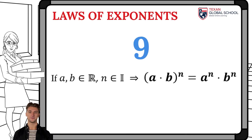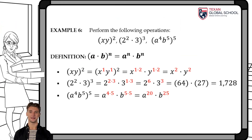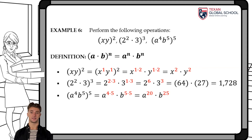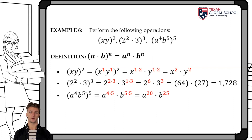The following definition indicates that the product of two different bases raised to the nth power is equivalent to raising each base with the same exponent n. For example, the product xy squared multiplies the exponents of each variable by the outer exponent, giving x squared y squared. The product of 2 squared times 3, all cubed, multiplying the exponents of each base, equals 2 raised to the sixth power times 3 cubed. Then 2 to the sixth is 64 and 3 cubed is 27, so the product is 1728. Finally, a to the fourth times b to the fifth, all raised to the fifth, gives a raised to the twentieth power times b raised to the twenty-fifth power.